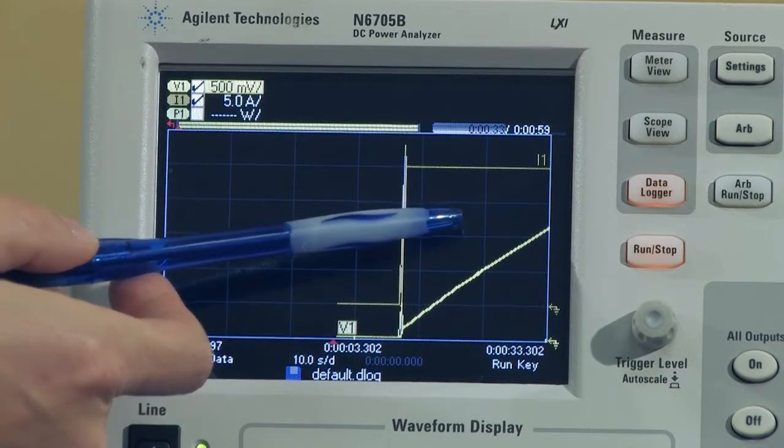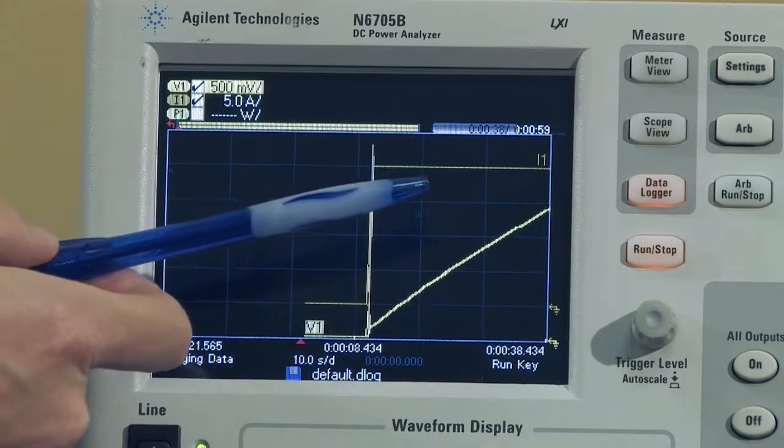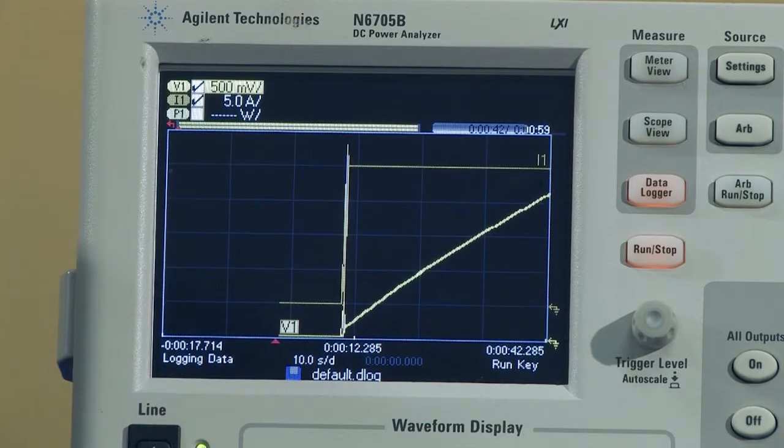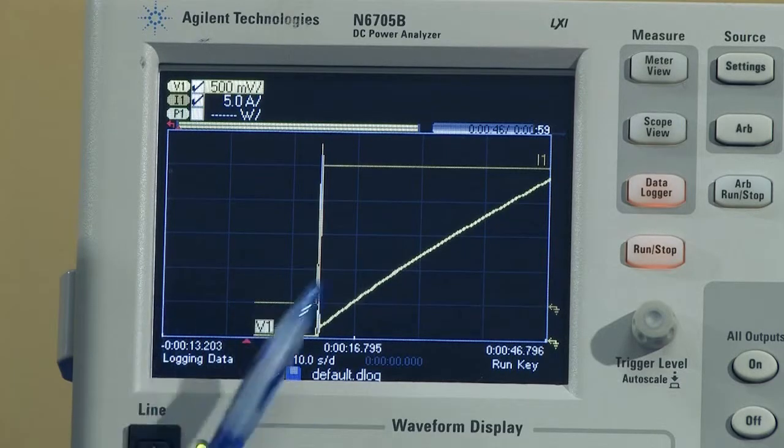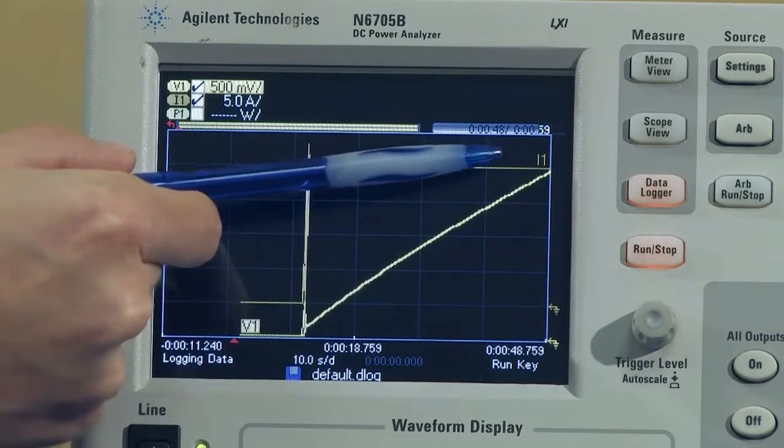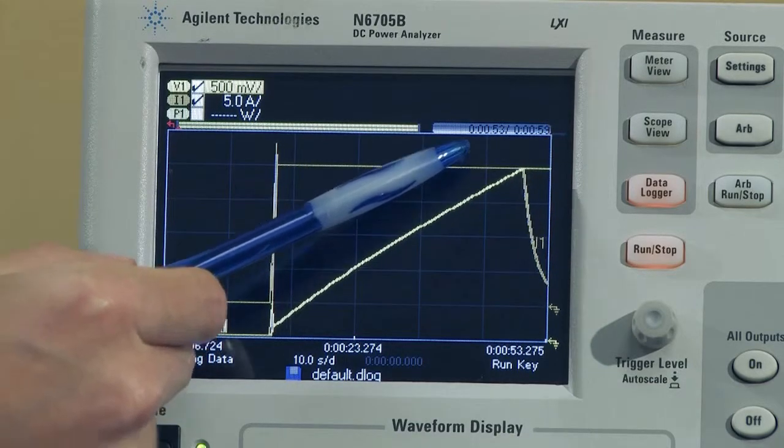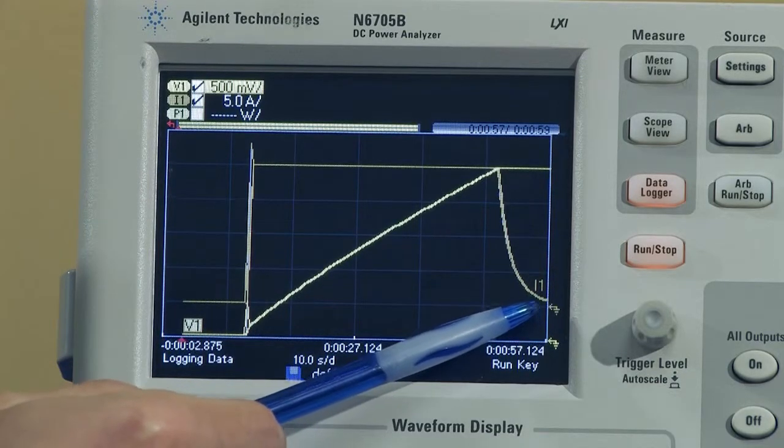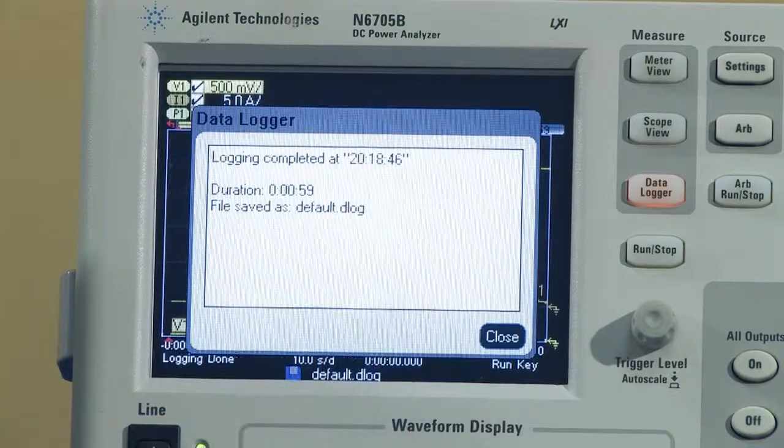And since this is a 310 farad capacitor at 20 amps, if you do the calculations it's roughly 40 seconds or so before the capacitor is fully charged to two and a half volts. Once it gets there, which is getting pretty close now, we should see the current start to drop down now, and it'll slowly drop down continuously.